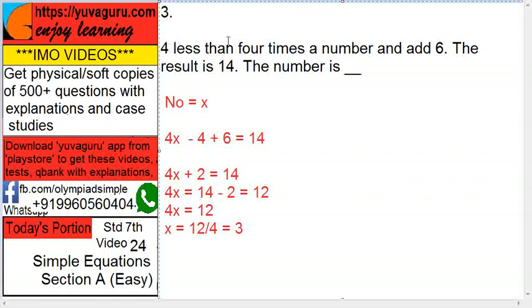4 less than 4 times a number and add 6, the resultant is 14. The number is, let the number be x.